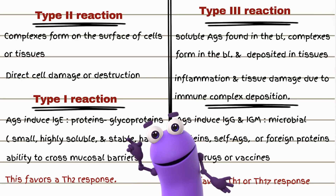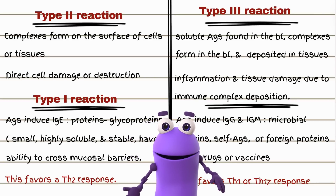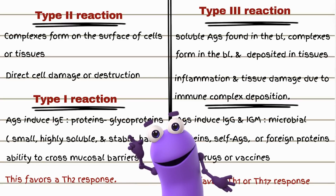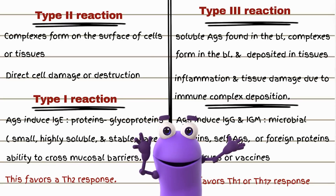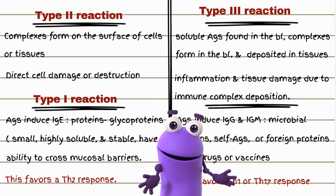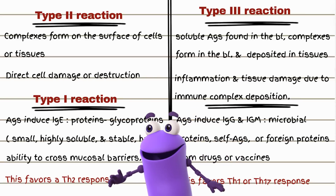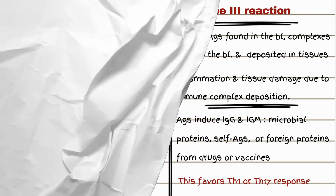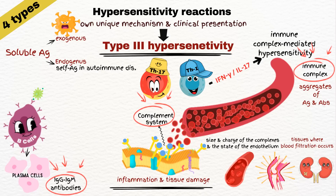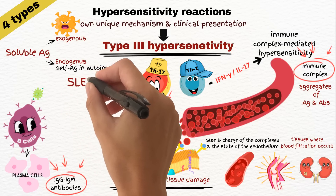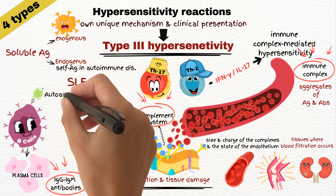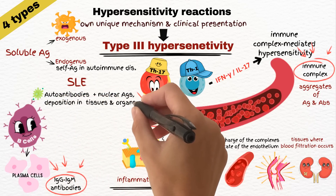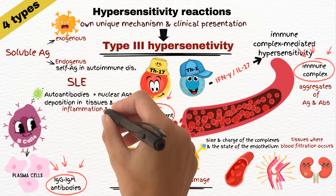Regardless of whether the antigen is soluble, the type of hypersensitivity reaction is determined by the nature of the antigen, the route of exposure, and the specific T-cell response it triggers. Type 3 reactions occur, for example, in systemic lupus erythematosus, where autoantibodies form immune complexes with nuclear antigens, leading to deposition in various tissues and organs, causing inflammation and damage, especially in the kidneys.